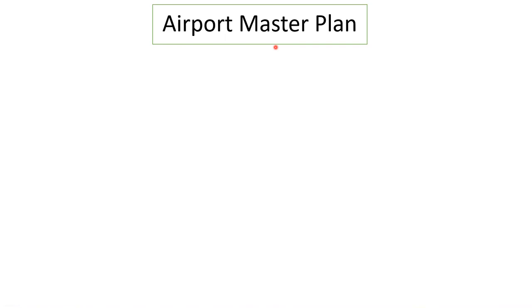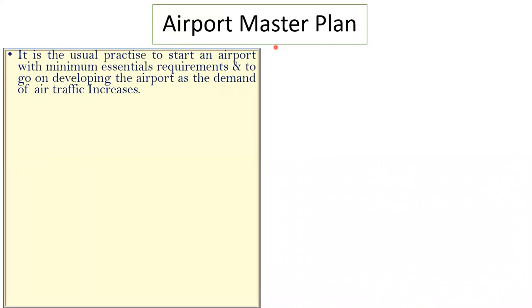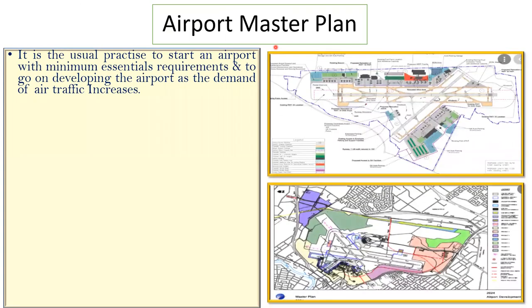In this lecture we will see what is an airport master plan and how we need to understand it. It is a usual practice to start an airport with minimum essential requirements and to go on developing the airport as the demand of air traffic increases. Whenever we plan something initially, we try to plan what is required as of now, and when it is required we try to expand that. This is a typical airport master plan.